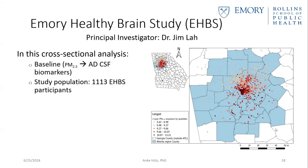In one of our previous studies, we could show that participants living south of downtown Atlanta were at the highest risk of developing Alzheimer's disease, or showed the highest association with air pollution. The reason is that we often also see joint effects of air pollution and other adverse risk factors. Air pollution is not the only factor that can negatively influence our cognitive health — living in a neighborhood with high poverty rates, high crime rates, and so on can also basically lead to synergistic effects with air pollution on our cognitive health.